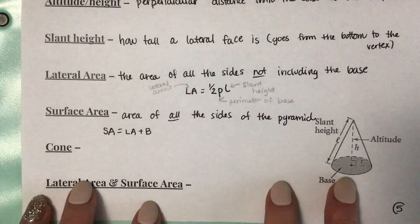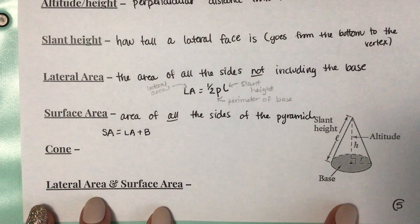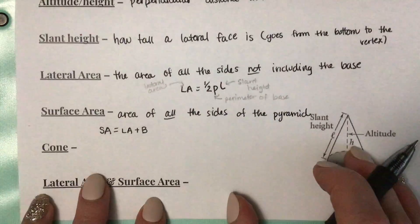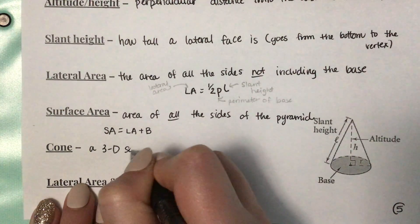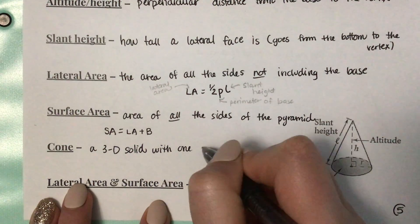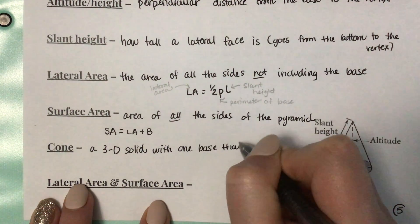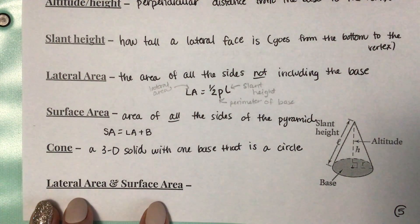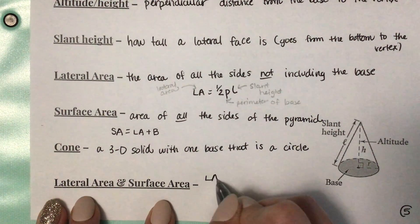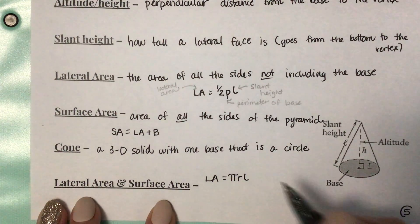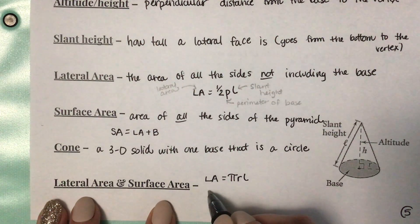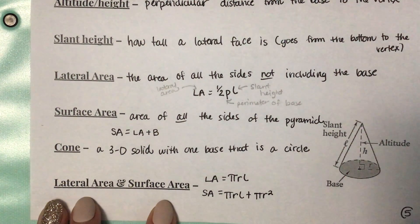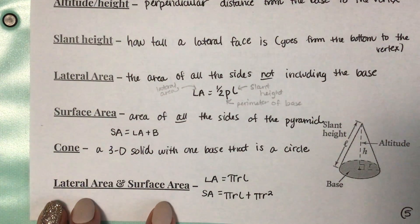We also have something called a cone in this section. A cone is a solid with one base that is a circle. The difference is the base is a circle for a cone, while the base for a pyramid is a polygon. We have formulas for lateral area and surface area of cones as well. Lateral area equals pi times the radius times l, and surface area equals pi times the radius times l plus pi r squared, because we add the bottom in. Surface area includes the base; lateral area does not.